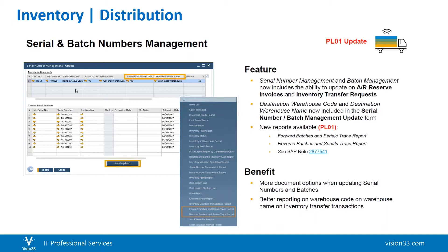Next is inventory and distribution. First off, it's serial and batch number management. This feature now includes the ability to update an AR reserve invoice and inventory transfer requests. Those marketing documents have been added to the number of documents that can be impacted by serial and batch number management. The destination warehouse code and warehouse name are also now included in the serial number batch management update form. There are also new reports available: forward batches and serials trace report and reverse batches and serials trace report, giving better reporting on warehouse code or warehouse name on inventory transfer transactions.